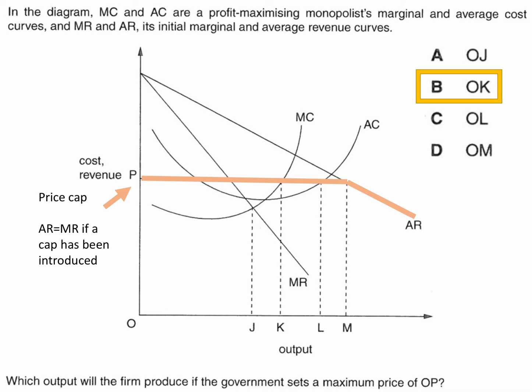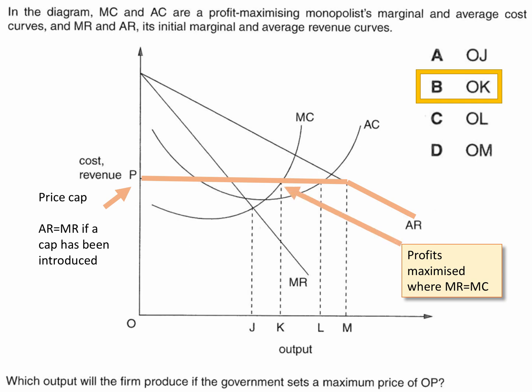That line effectively becomes the marginal revenue curve for this monopolist. Profits are maximised where MR meets MC, and we're told he's a profit maximising monopolist. So we're looking for the intersection of that line with the marginal cost curve — and we find it at output OJ.